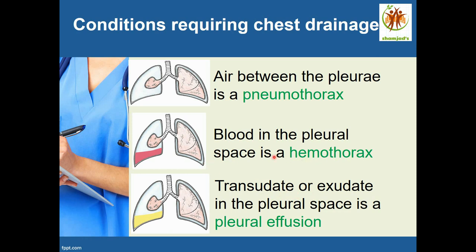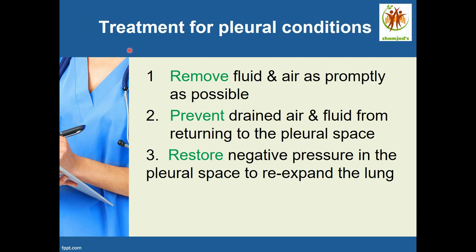The transudate in pleural effusion usually comes from infections like TB or pneumonia. Hemothorax results from trauma such as road traffic accidents, fall from height, external trauma, or surgical interventions like thoracic or cardiac surgeries. Pneumothorax comes from a hole inside the lung, like a bulla, or from stab wounds — air escapes into the pleural cavity from the lung.